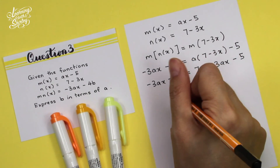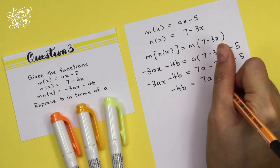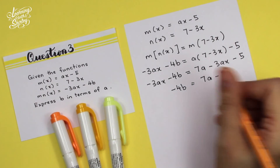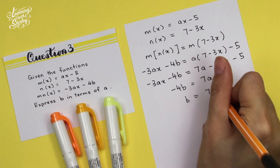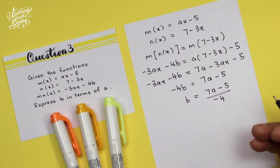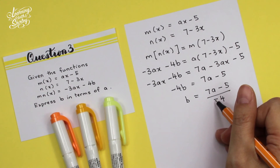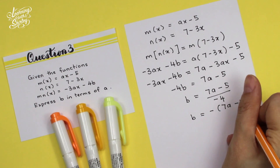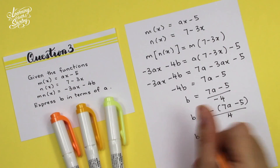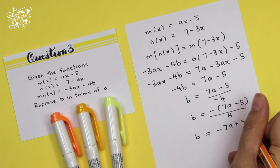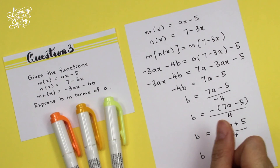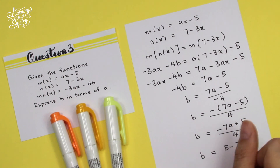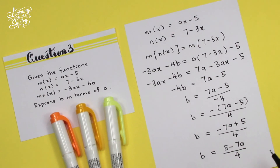Comparing both sides, the difference is negative 4B and 7A minus 5, so negative 4B = 7A minus 5, giving B = (7A minus 5) / negative 4. Bringing the negative sign to the numerator: B = (negative 7A plus 5) / 4, which we rewrite starting with the positive term. The final answer is B = (5 minus 7A) / 4.